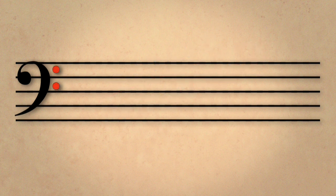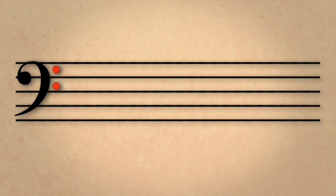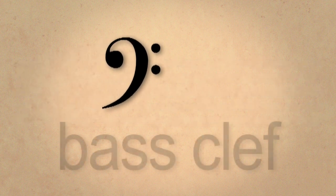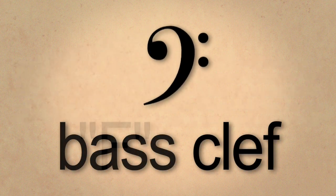Now notice the two small dots on the right side of the clef. These dots are on either side of the fourth line where the F sits. Therefore, the bass clef is also called an F clef.